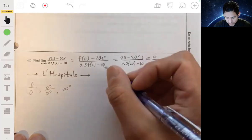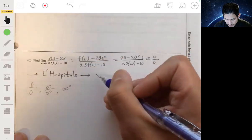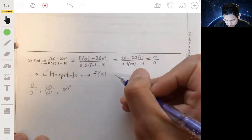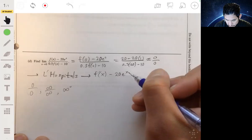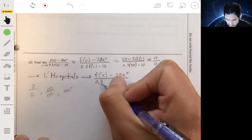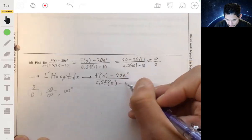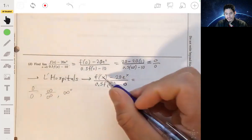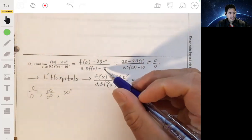So let's find the derivative of the top, f, which will be f prime of x minus 20 e to the x over 0.5 times f prime of x minus 0. Then let's try direct substitution again. Plug in that 0 again.